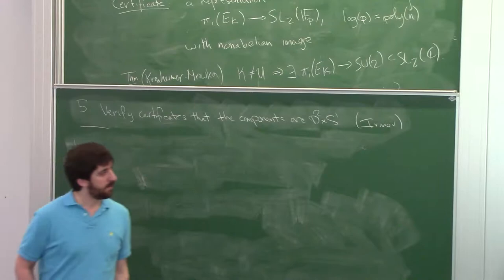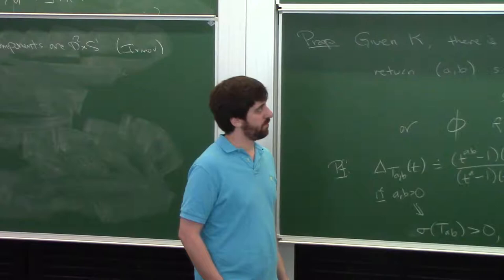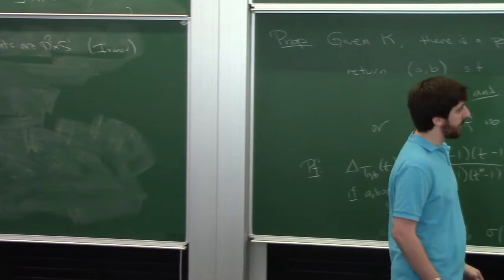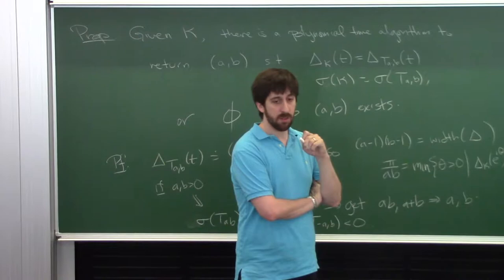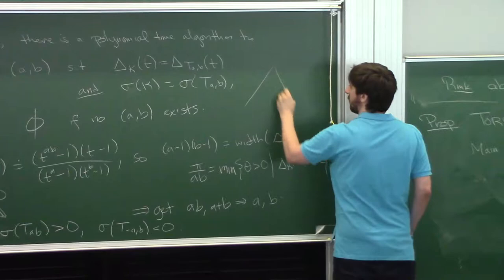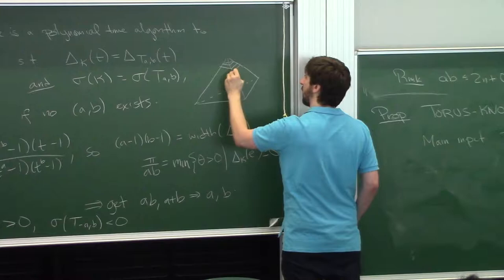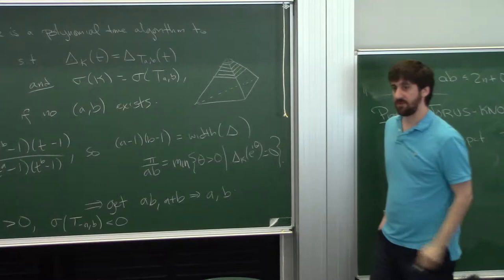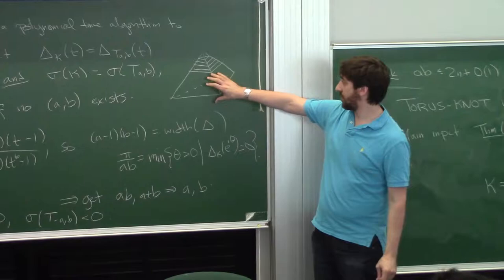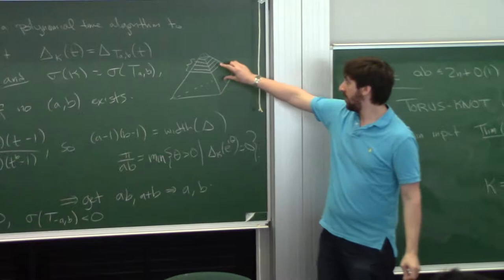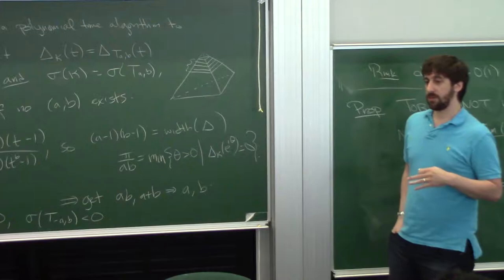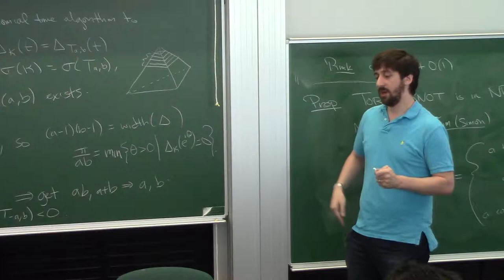A question is raised: the normal coordinates have polynomial bit size but possibly exponential natural size. What Lackenby does is convert to a handle structure. The idea is that decomposing isn't so bad unless you have a whole bunch of parallel disks passing through one of the tetrahedra, giving possibly exponentially many pieces. He handles this by noting that if you forget what's in the middle, you know what the complement looks like, and the thing in the middle — going between all those parallel disks — is just a bundle over some surface, which you can compute efficiently by building a handle structure and gluing it into place.